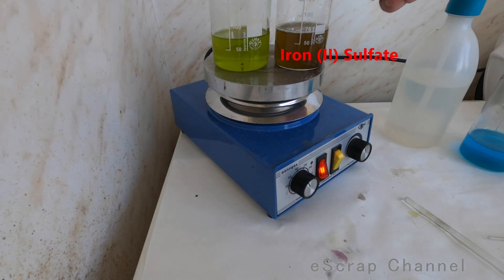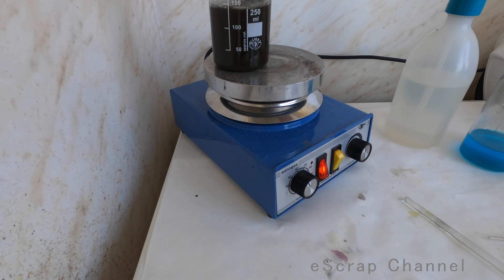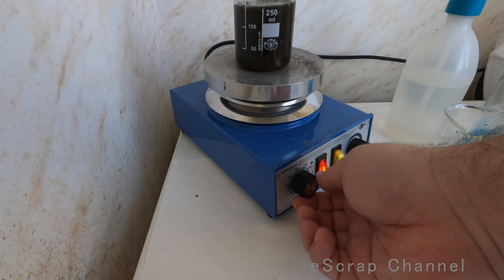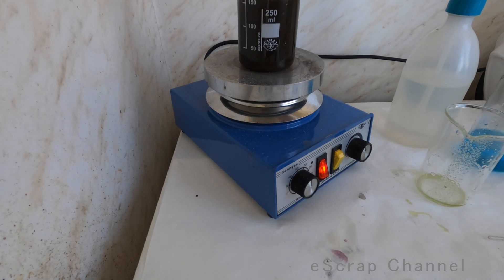Okay so iron 2 sulfate, here it is. Gold here it is, it's time to precipitate it. Gold here we go, here we go that's our gold. Let's boil it now, let's stir a little bit and let's boil it.